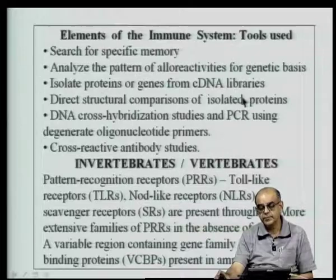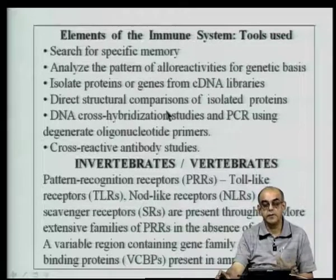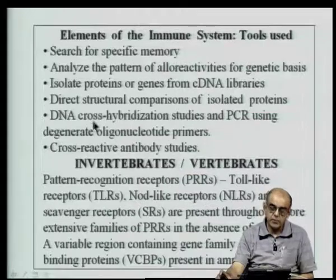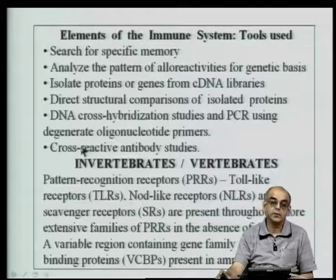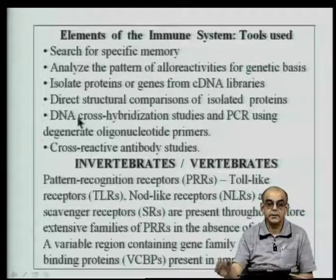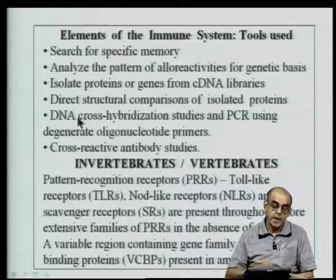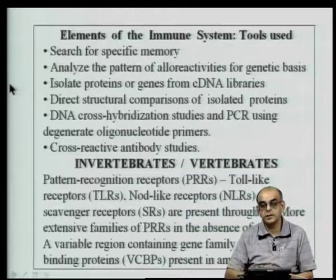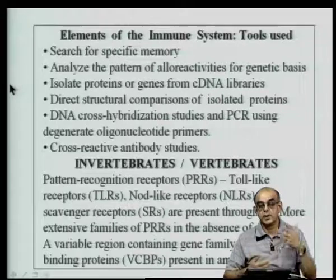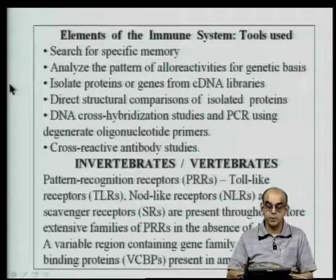One looks for evidence of proteins participating in some sort of immune system in early organisms, making direct structural comparisons of isolated proteins. Cross-hybridization studies using DNA probes and PCR degenerate oligonucleotide primers are used to find sequences similar to those in higher mammals. One of the most important studies is to take antibodies raised to molecules in the higher mammalian immune system and see whether they cross-react with antigens in early animals, insects, and so on.